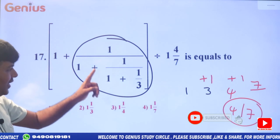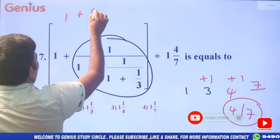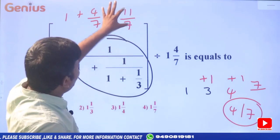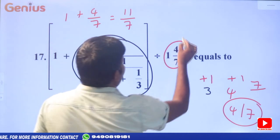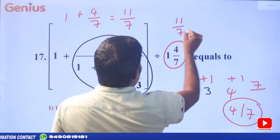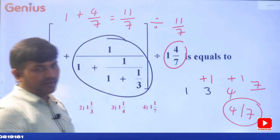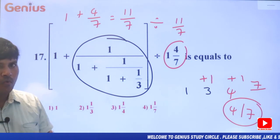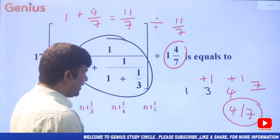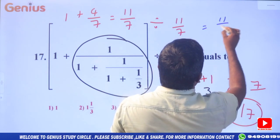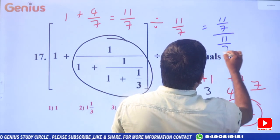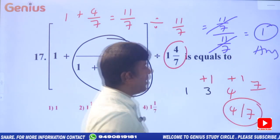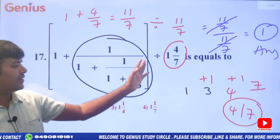Rounded is 4 by 7. Now 1 + 4/7 = 11/7. How do you divide? 11/7 divided by 11/7 — the answer is 1. So finally the answer is 1.